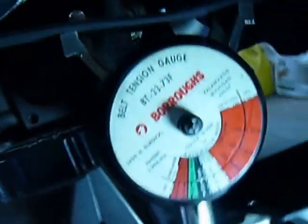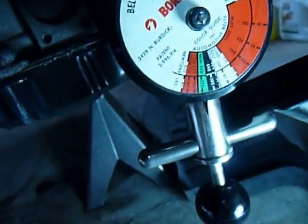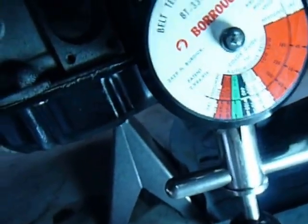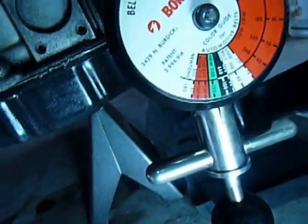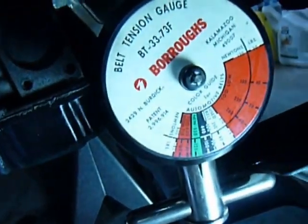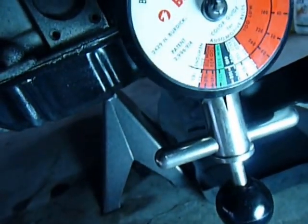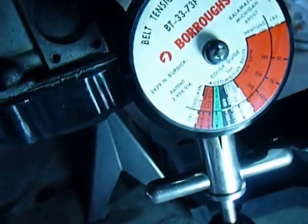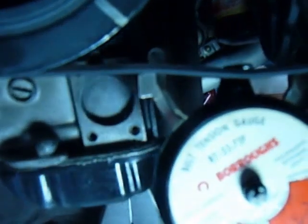That's right now, now it's at the black 100 foot-pounds of torque or foot-pounds or whatever, and that's right because it's a used belt. That's what that should be.